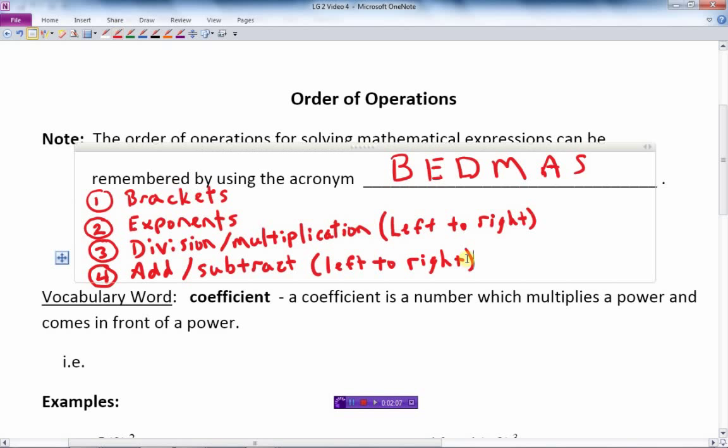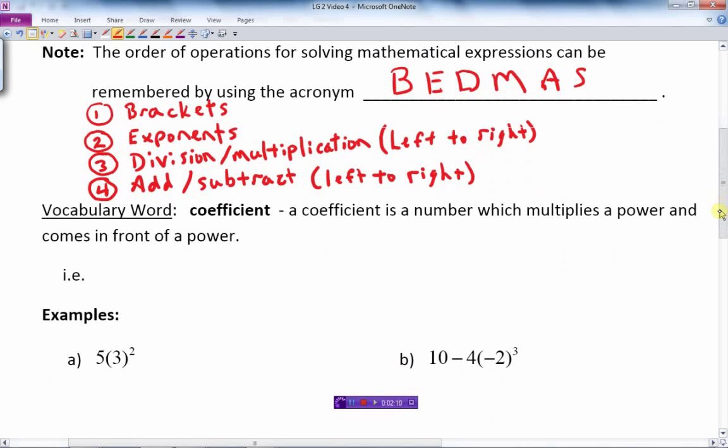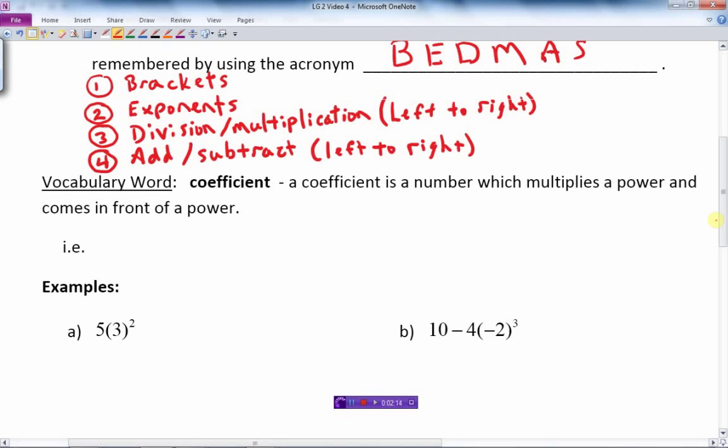With that said, I got one more vocabulary word I want to talk about here, and that's the word coefficient. A coefficient is a number which multiplies a power and generally speaking comes in front of the power. So if I have an expression like this, 2 times 4 squared, well that 2 is what we call the coefficient.